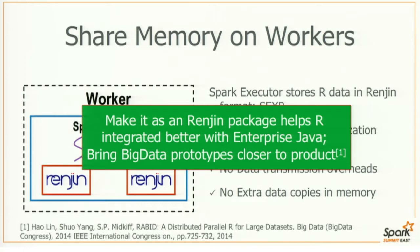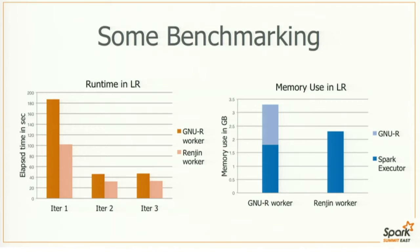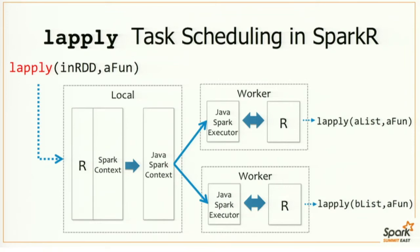Here is some benchmarking. For logistic regression, using Renjin workers allows us to finish jobs in shorter times per iteration compared to GNU R workers. For memory usage, GNU R workers consume memory both in the Spark Executor and multiple GNU R processes, while Renjin workers only consume memory in the Spark Executor. Next, I'll hand over to my co-speaker to talk about vectorization.